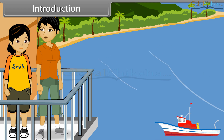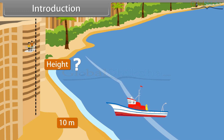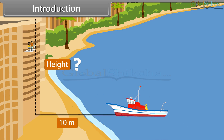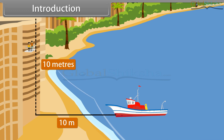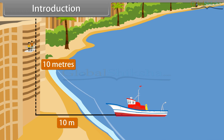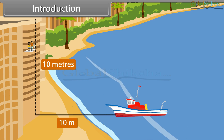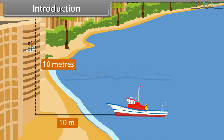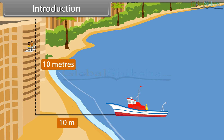Yes, sure. I have learnt my trigonometry well. The answer to your question, that is, the height of the building is 10 meters. Anvesha used trigonometry to answer Vedika's question. In this lesson, you will learn about the relationship between angles and sides of a triangle.